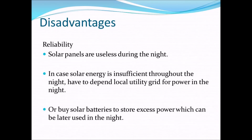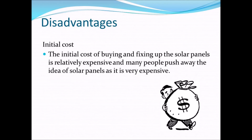Solar energy is unreliable as it is an intermittent energy source. Access to sunlight is limited at certain times, predicting overcast days can be difficult, and solar panels are useless during the night. In case solar energy is insufficient, we have to depend on the local utility grid for power at night. This is why solar power is not our first choice when it comes to meeting base load energy demand. However, solar power has fewer problems than wind power when it comes to intermittence. Additionally, the usual cost of buying and installing solar panels is relatively expensive, and people often brush away the idea of solar panels immediately.